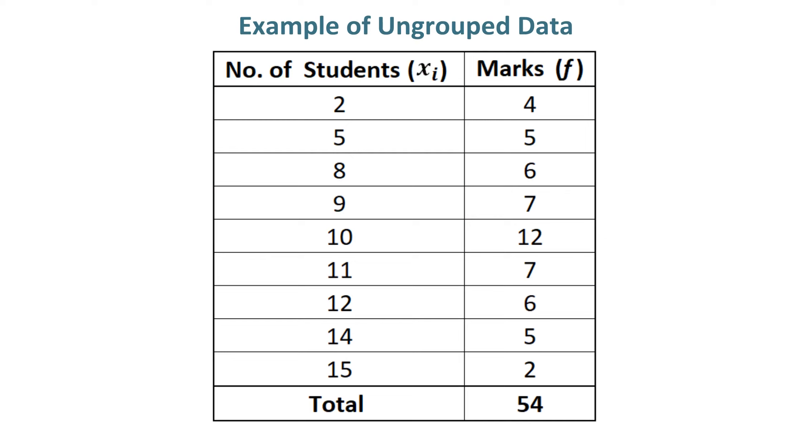The frequency is given in front of number of students, xi, which becomes class marks or midpoints in ungrouped data.